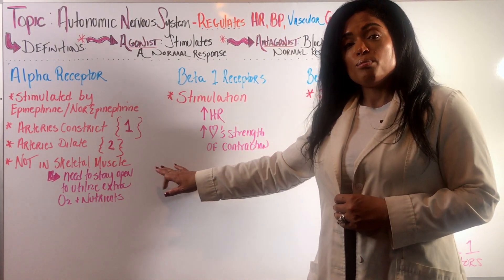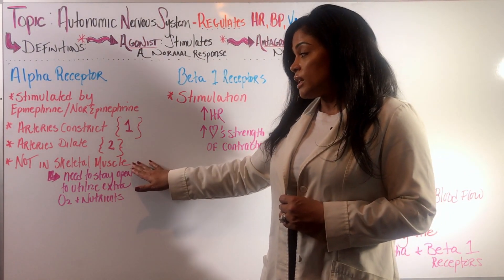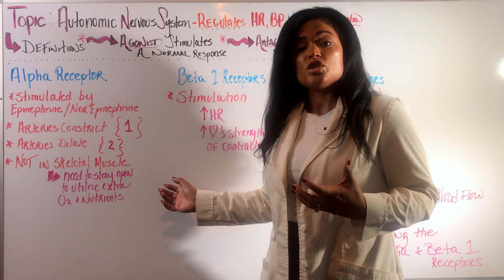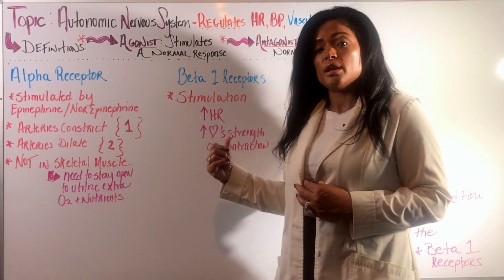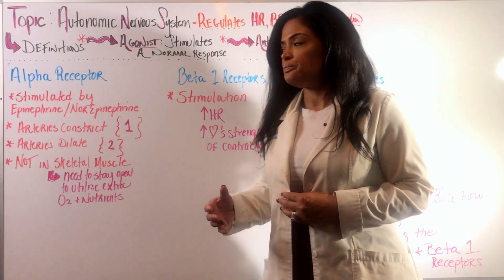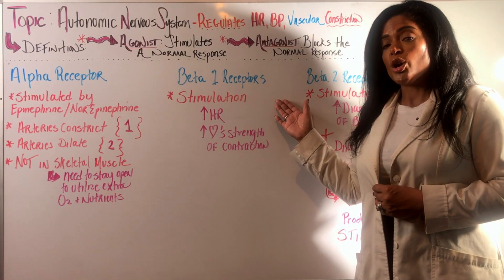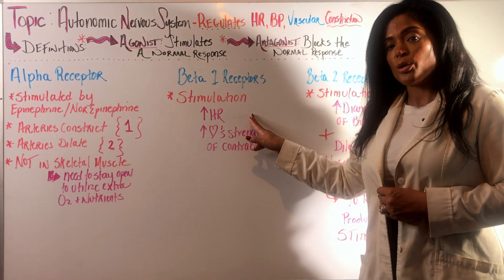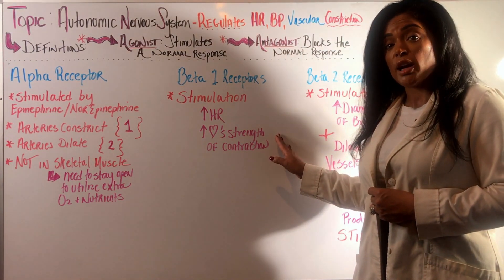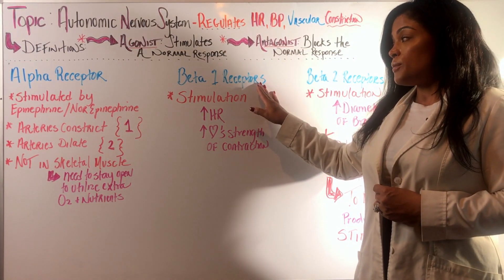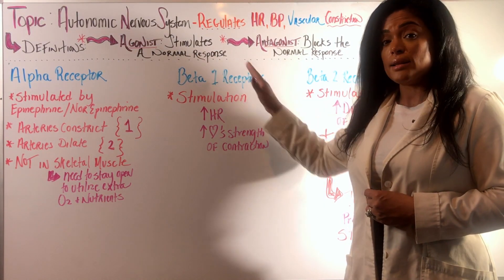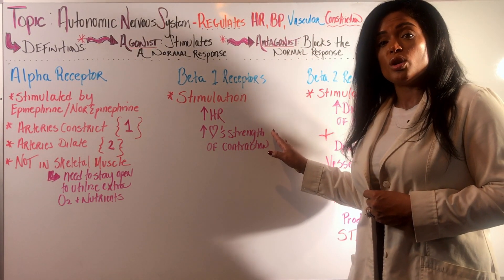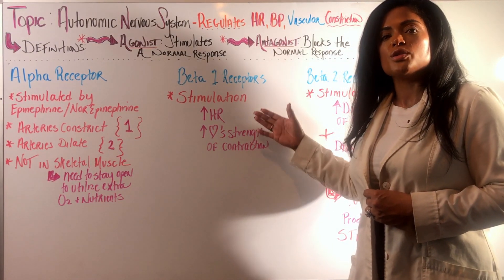Remember, alpha receptors are not located in the skeletal muscle arteries — those need to stay open so they can utilize the extra oxygen and nutrients coming from the stimulation of the other receptors. Your beta-1 receptors, one for one heart, when stimulated cause an elevation in heart rate due to the increase in strength of your heart's contraction. If your heart is contracting faster and stronger, it gives you a higher heart rate.